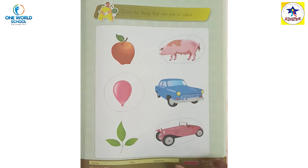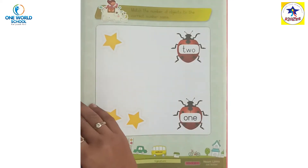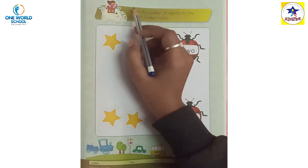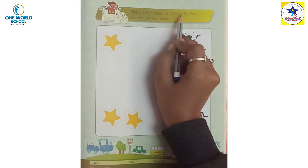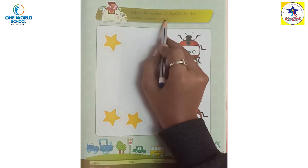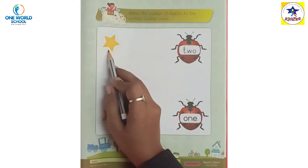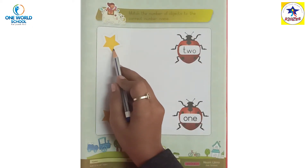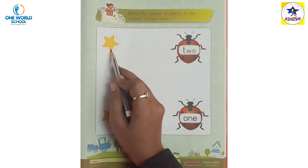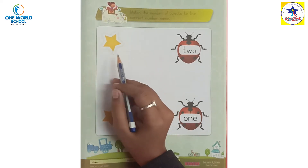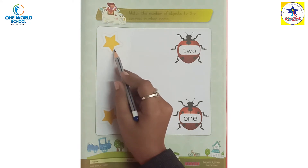Then we have to turn our page. Match the number of the object to the correct number name. यह क्या है? Star. Which color? Yellow color का है। कितने stars हैं? Only one. तो हमें उसको number name रुनना है।